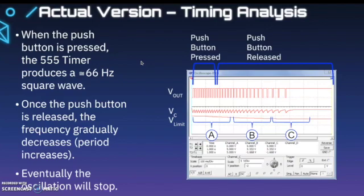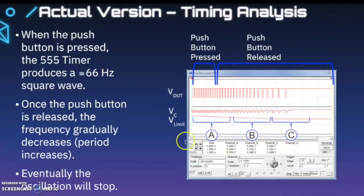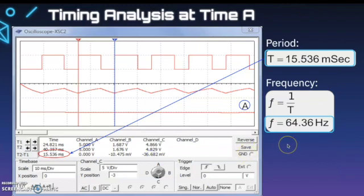We need to look at a couple of different times. They broke this down into three segments: time A, time B, and time C. Looking at time A, zooming in inside our oscilloscope between the two cursors, we've got a period of 15.536 milliseconds and our frequency is 64.36 hertz.